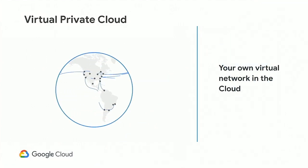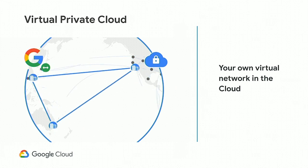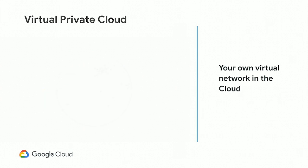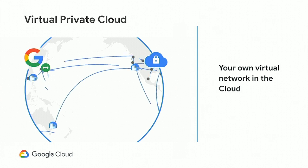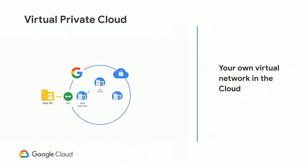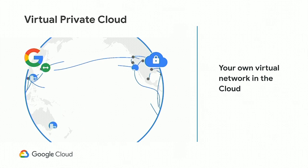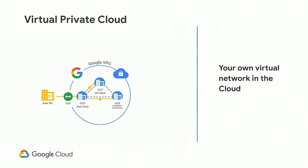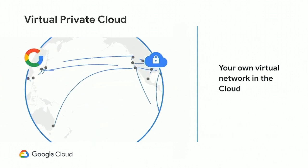A VPC is basically a customer's network in Google Cloud. It's a virtual network and it is global in nature. What global means is: let's say you have a deployment in US West and another deployment in US East — we do not require you to create two different VPCs. With global VPCs, these two deployments can talk to each other automatically without any special provisioning on your side. We also offer VPC peering. So if you have a VPC in your project or your org, you can connect to another VPC in the same project, a different project in your org, or a totally different org.